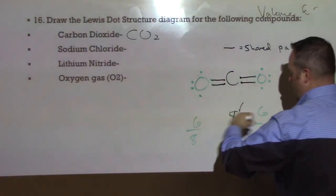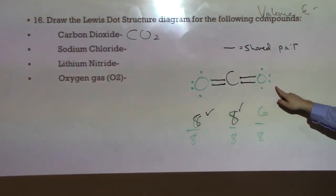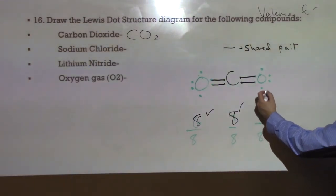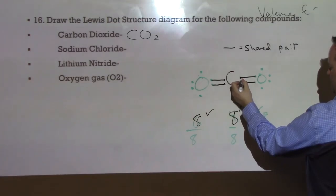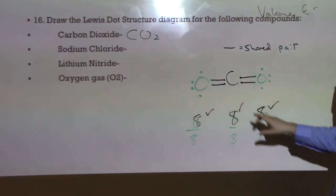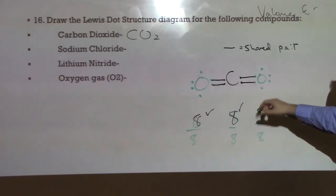Look at oxygen. It started out with 6, it wants to have 8. So, it has 1, 2, 3, 4, 5, 6, but it also gets to count these two. So, it's 7, 8. So, oxygen now has 8. The same thing is true with this one. Okay. Again, it has 1, 2, 3, 4, 5, 6, but it gets to count 7 and 8 also.